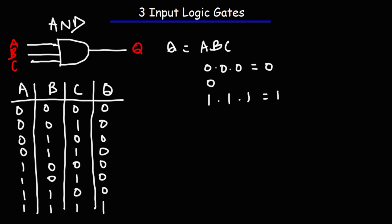So that's the truth table for the AND gate. A, B, and C all have to be active in order to get an output of 1 — if not, everything else will be a 0.